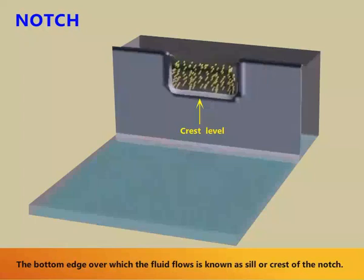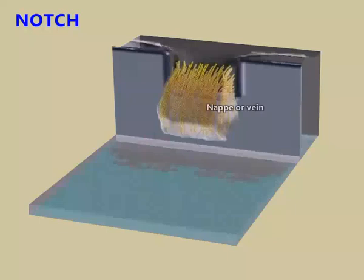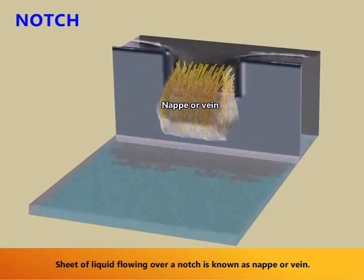The bottom edge over which the fluid flows is known as a sill or crest of the notch. The sheet of liquid flowing over a notch is known as a nappe or vane.